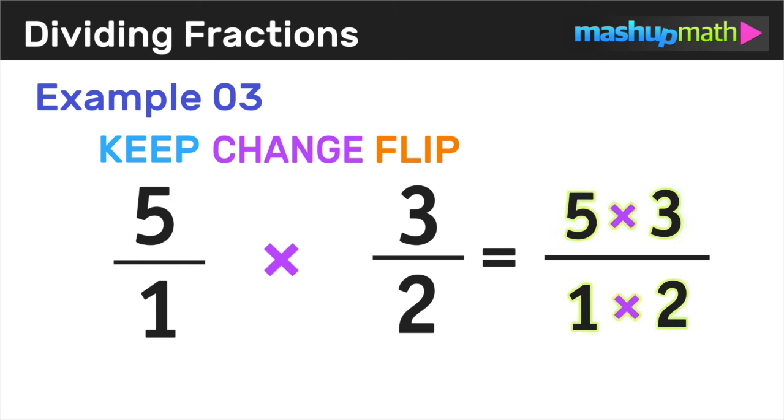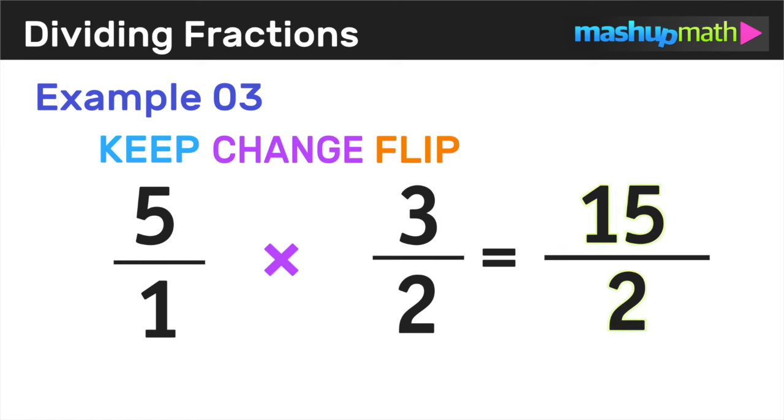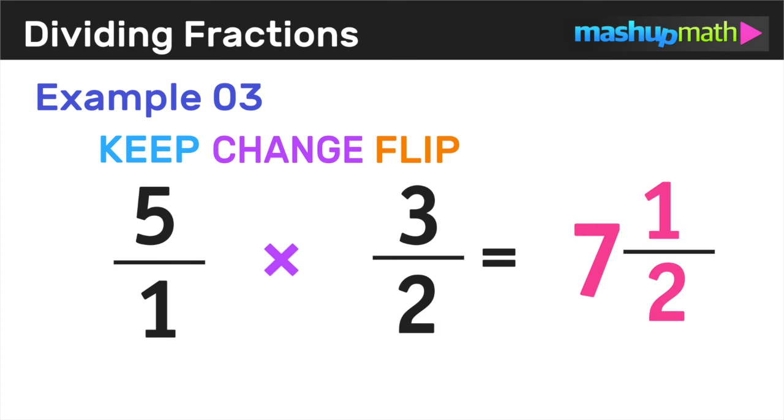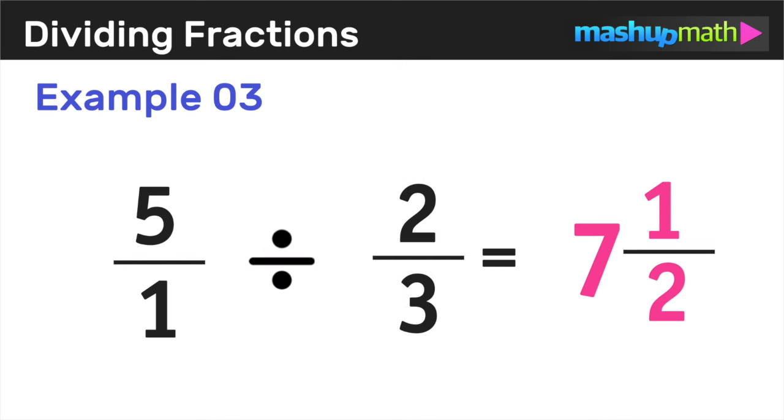Now all we have to do is multiply the fractions together and simplify. So the result is 15 over 2, which cannot be simplified. However, it can also be expressed as 7 and 1 half. So either solution works. 15 over 2 or 7 and 1 half. And we can conclude that the original question 5 divided by 2 over 3 is equal to 7 and 1 half.